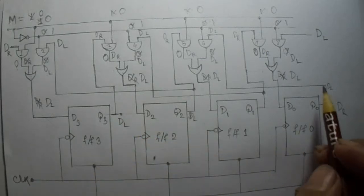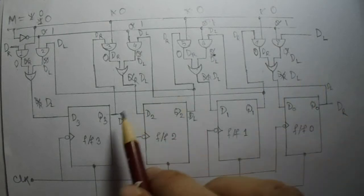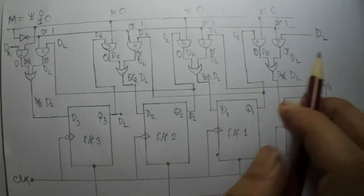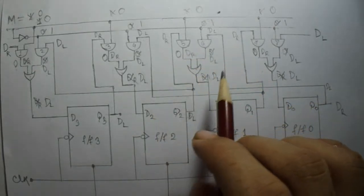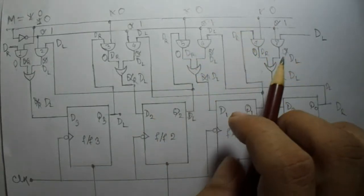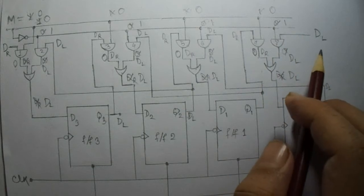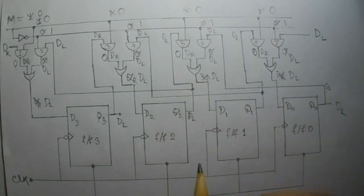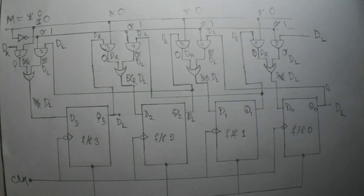You can see this DL is shifted from right to left. That is why it is called left shift, because it shifts from right to left. So this is all for the bidirectional shift register. In the next lecture I will discuss about the universal shift register. Thank you.